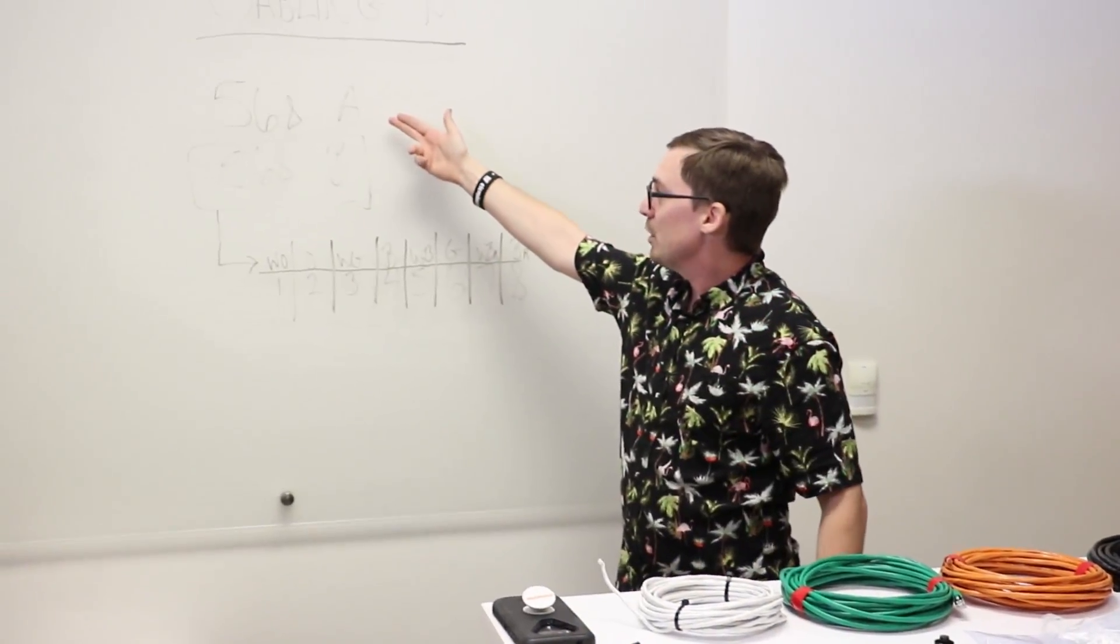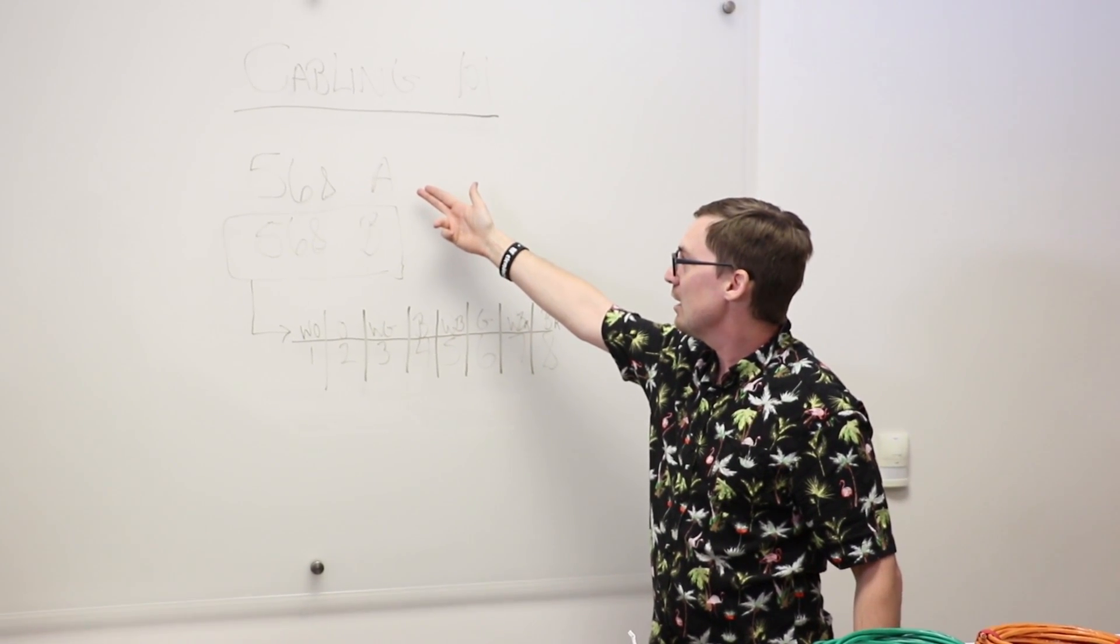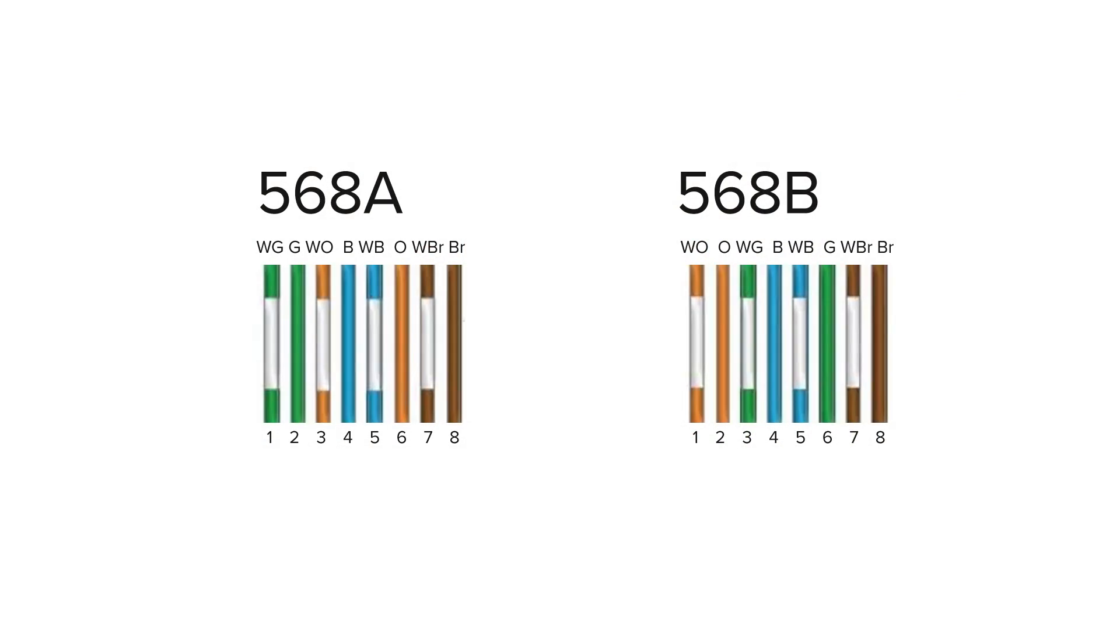You've got two different quasi-crimps, 568A and 568B. Really the difference is just the pairs and how they're crimped down. Most people out there in the world today use 568B.